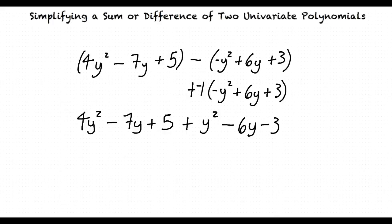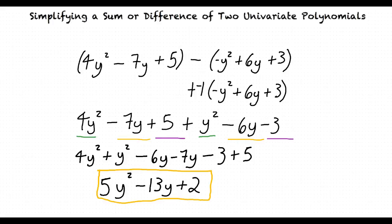Combine the like terms: y squared with 4y squared, negative 6y with negative 7y, and negative 3 with 5. This addition results in an answer of 5y squared minus 13y plus 2. To recap,